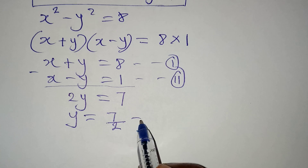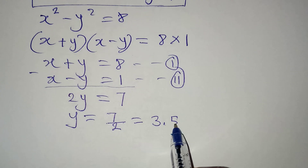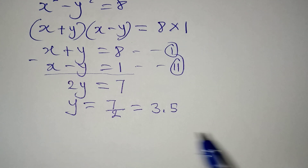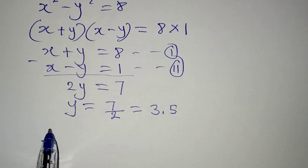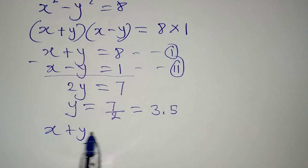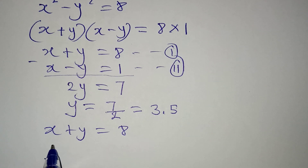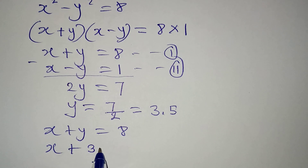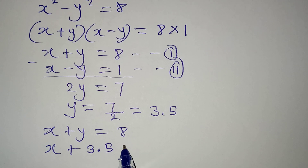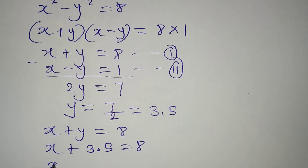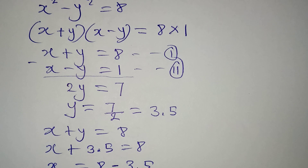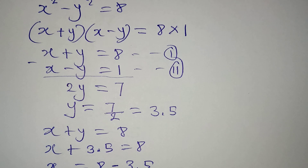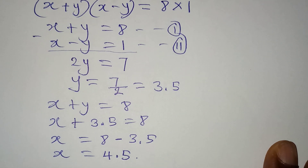Seven divided by two is the same as three point five. Taking a step further, put this into equation one: x plus y equals eight. So x plus three point five equals eight, and x equals eight minus three point five, giving x equals four point five.